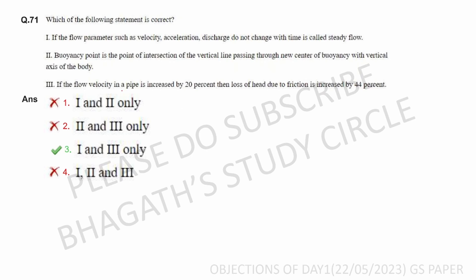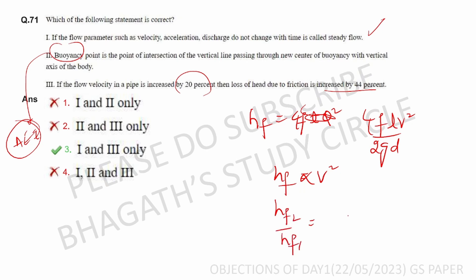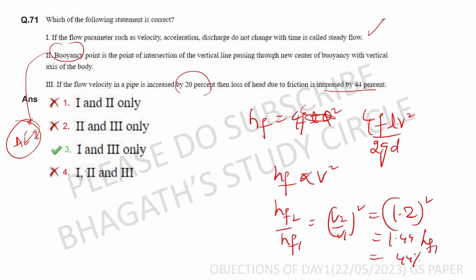Next: first statement — if flow parameters such as velocity, acceleration, and discharge do not change with time, it is steady flow — correct. Second statement: if flow velocity in a pipe is increased by 20%, the head loss due to friction increases by 44%. Since hf is proportional to v², hf₂/hf₁ = (1.2)² = 1.44, i.e., a 44% increase. That statement is correct.